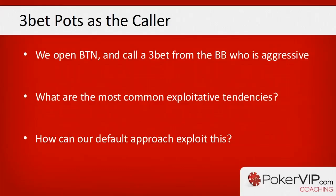When a player c-bets the flop out of position and then checks the turn, their range is often constructed in a specific way: either they have complete air which they're giving up with — and we don't need a large bet to take the pot — or they are trapping. If they're trapping, we want to lose the least amount of money when we get check-raised. For the most part, our opponent's range will be weak, but we don't want to lose a ton of money that small amount of the time our opponent is trapping and going for a check-raise.